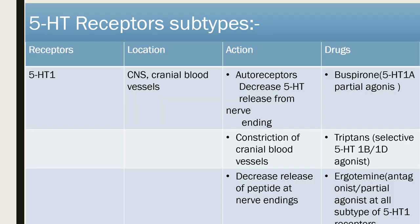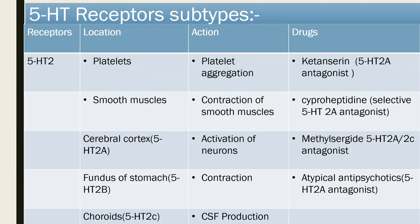Subtypes of 5-HT receptor: 5-HT1 receptor — location is CNS and cranial blood vessels. Actions: it acts as an autoreceptor and decreases 5-HT release from nerve endings; drug is buspirone, a 5-HT1 partial agonist used as an anti-anxiety agent. Second action: constriction of cranial vessels, used in migraine — triptans are selective 5-HT1B and 1D agonists used in acute migraine. Third: decrease release of peptide at the nerve ending; drug is ergotamine, which is an antagonist and partial agonist at all subtypes of 5-HT receptors.